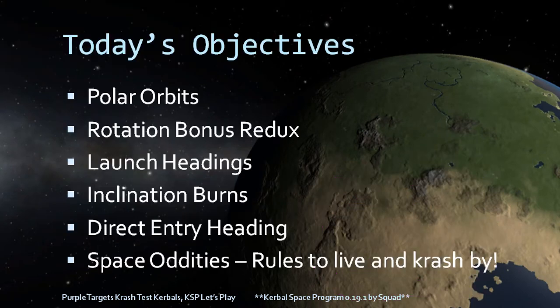For today's objectives we're going to look at inclination changes — both how to calculate them and how to avoid them. Many transfer orbits will be around the equator to maximize speed bonuses, but low inclinations are limiting for ground coverage. For scanning operations, high altitude comms, or navsats, we need to know how to get into a polar orbit. We'll also revisit why planetary rotation is an important factor to consider.